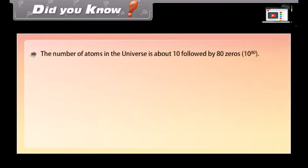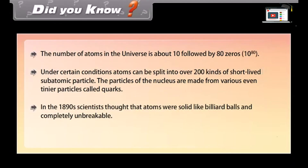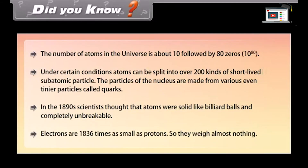Did you know: The number of atoms in the universe is about 10 followed by 80 zeros. Under certain conditions, atoms can be split into over 200 kinds of short-lived subatomic particles. The particles of the nucleus are made from even tinier particles called quarks. In the 1890s, scientists thought atoms were solid like billiard balls and completely unbreakable. Electrons are 1836 times as small as protons, so they weigh almost nothing.